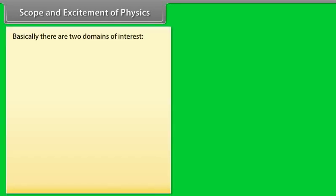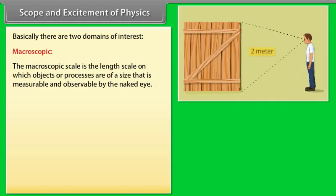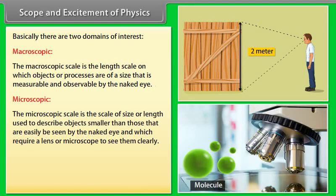Scope and excitement of physics. From a person beginning to work to communication over thousands of kilometers, physics has very wide scope. Basically, there are two domains of interest: Macroscopic - the macroscopic scale is the length scale on which objects or processes are of a size that is measurable and observable by the naked eye. Microscopic - the microscopic scale is the scale of size or length used to describe objects smaller than those that can easily be seen by the naked eye and which require a lens or microscope to see them clearly.